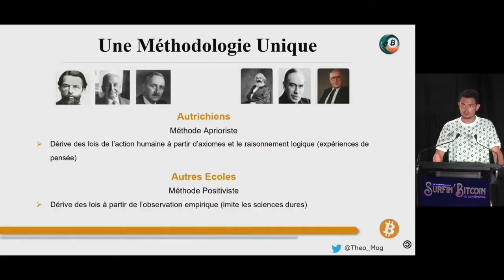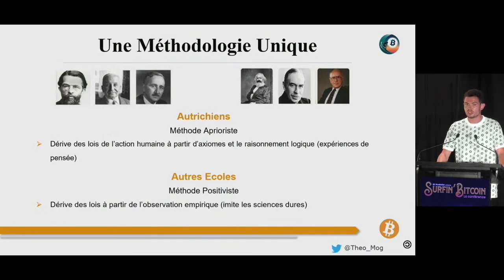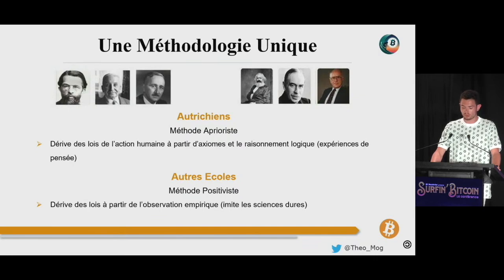À de rares exceptions, aucun d'entre eux n'a réussi à mettre en garde contre l'inflation qui allait nécessairement résulter des mesures exorbitantes de soutien à l'économie, aveugles aux signaux qu'une bande de dégénérés aux yeux lasers avait pourtant perçus. Comme l'expliquait parfaitement Frédéric Hayek à l'occasion de son discours de Nobel en 1974, la science économique piétine parce qu'elle s'appuie sur une méthodologie erronée.